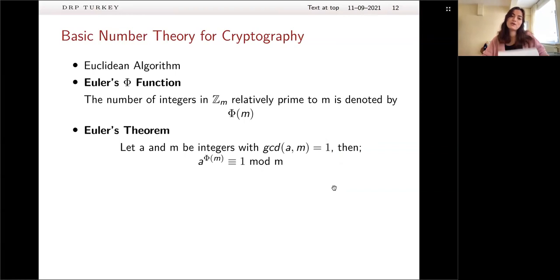So I want to talk about some basic number theory knowledge for cryptography, because in the following slides, I will talk about RSA. And for studying RSA, one needs to know some basic number theory. So there are Euclidean algorithm, Euler's phi function, and Euler's theorem. Since we all know Euclidean algorithm from our discrete math classes, I'm not going to talk about it. But I will just remind you what Euler's phi function and Euler's theorem are. So Euler's phi function says that the number of integers in Zm relatively prime to M is denoted by phi of M. And Euler's theorem says that A and B be integers with greatest common divisor equal to 1. Then A to the phi of M must be equal to 1 in modulus M.